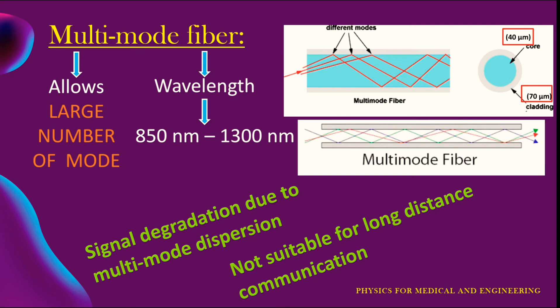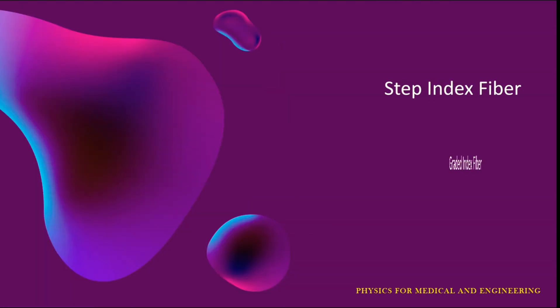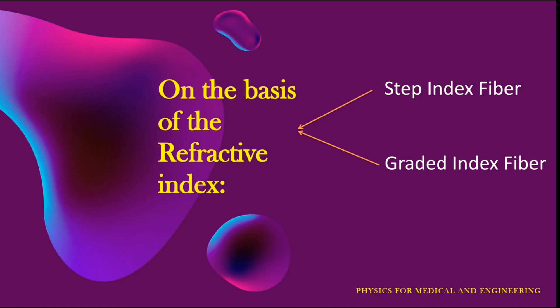Due to multi-mode dispersion, it is not suitable for long distance communication due to large dispersion and attenuation of the signal. There are two categories on the basis of multi-mode fiber: step index fiber and graded index fiber. Basically, there are categories under the types of optical fiber on the basis of refractive index.